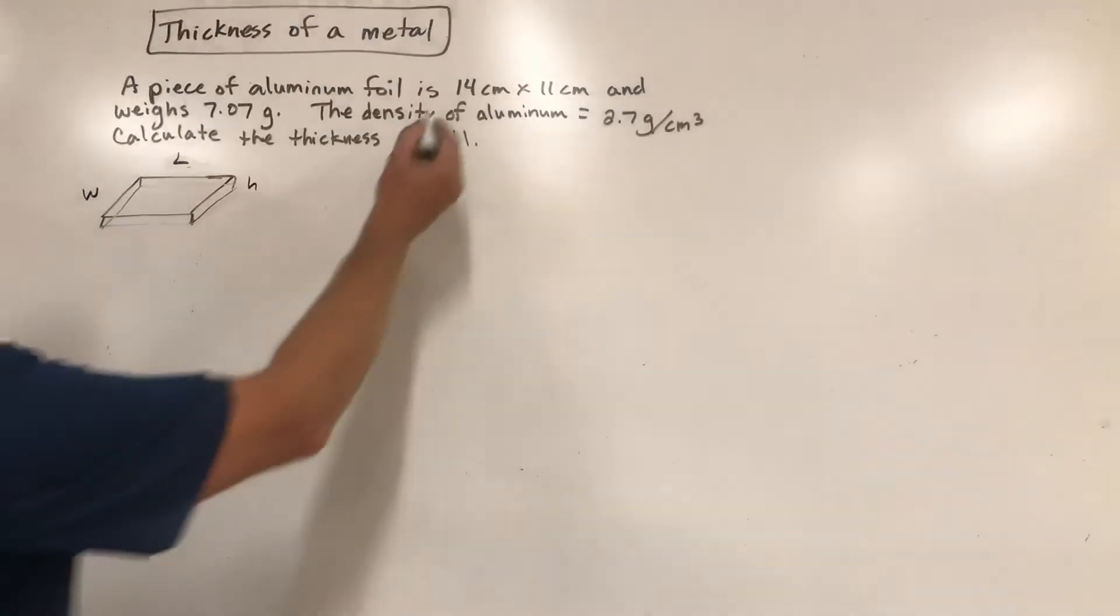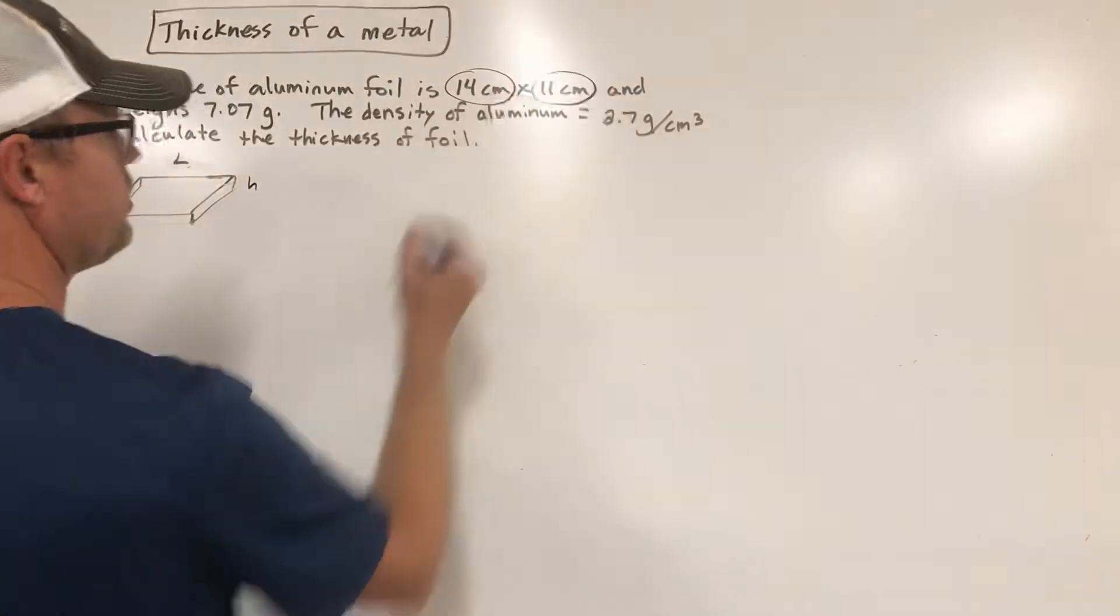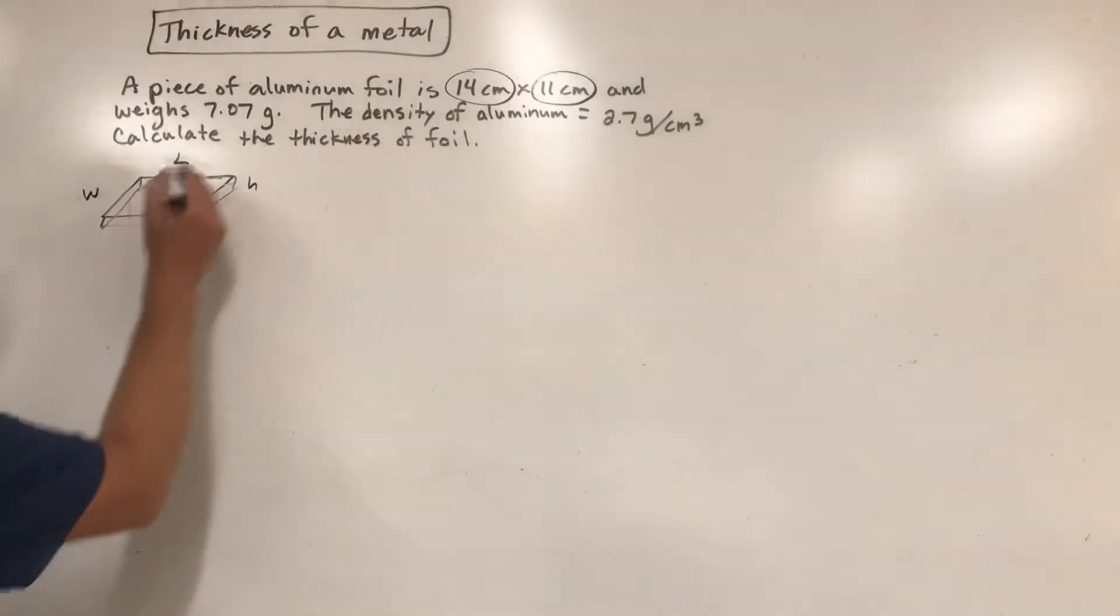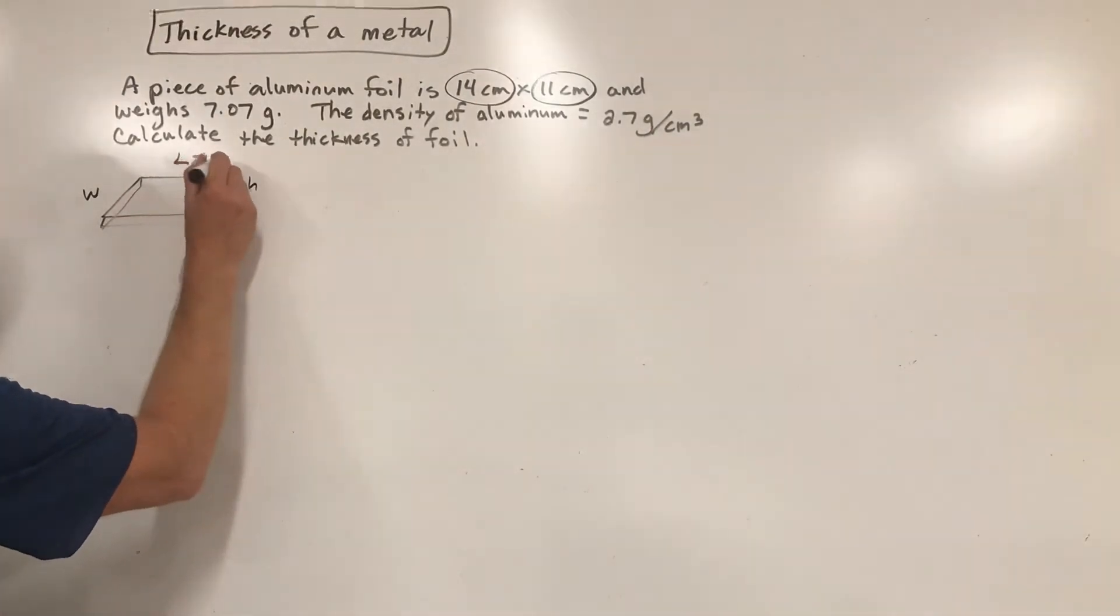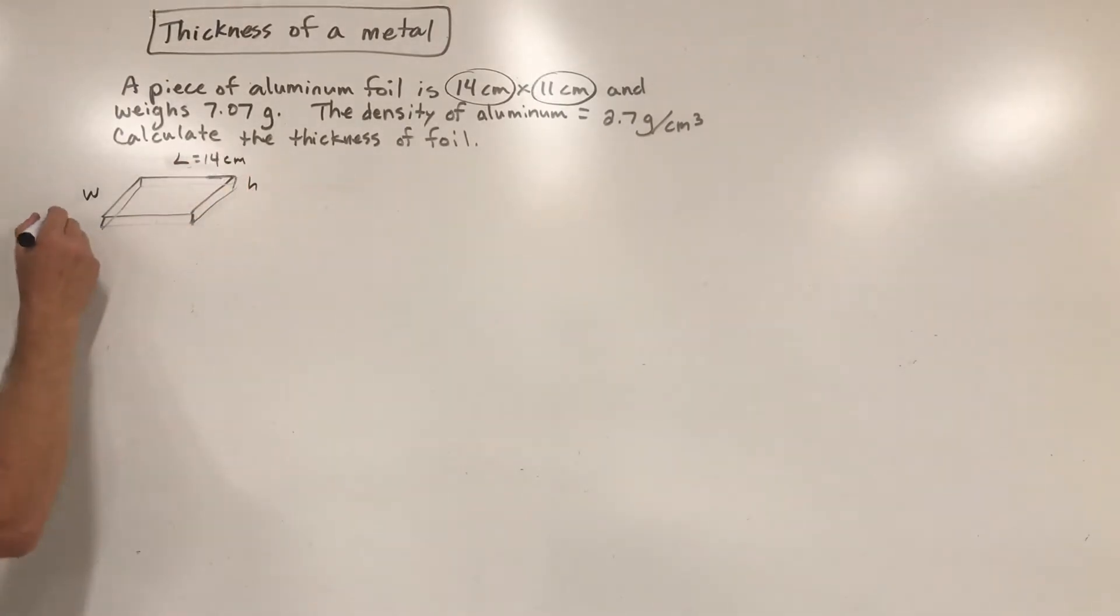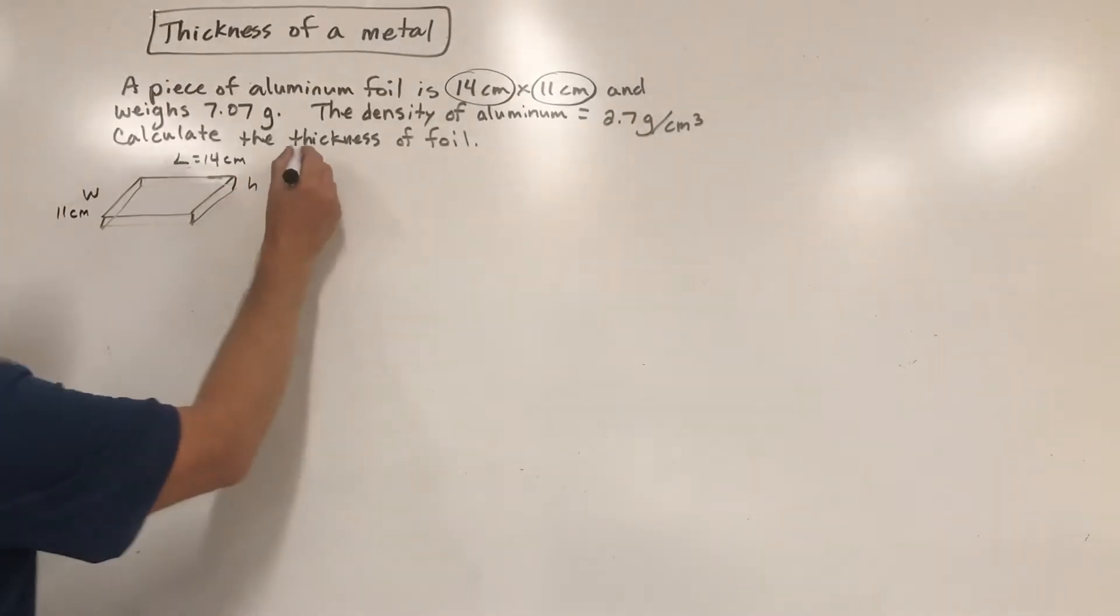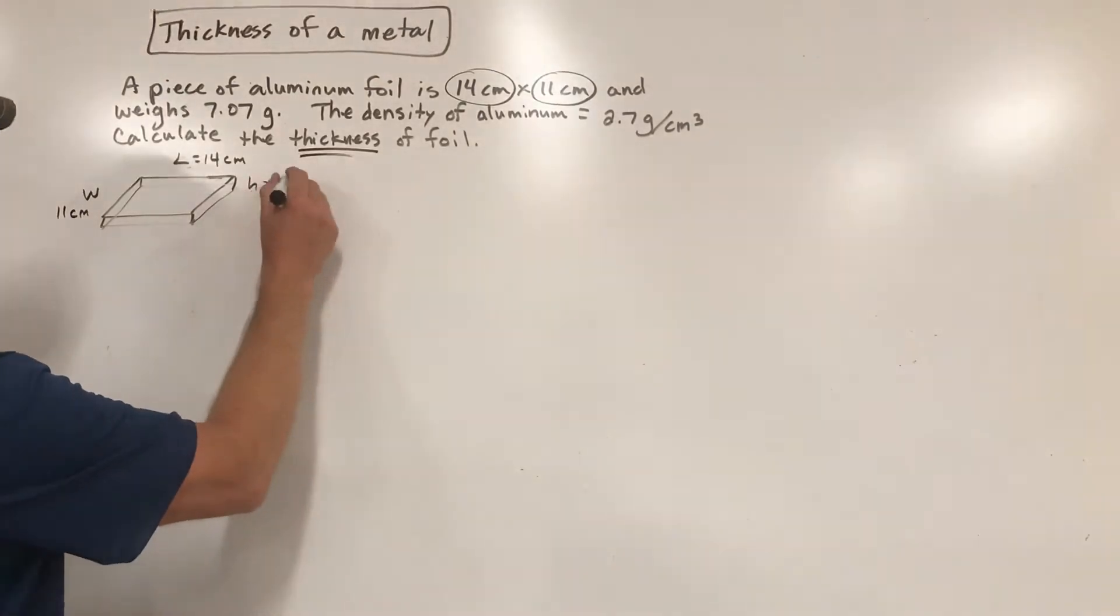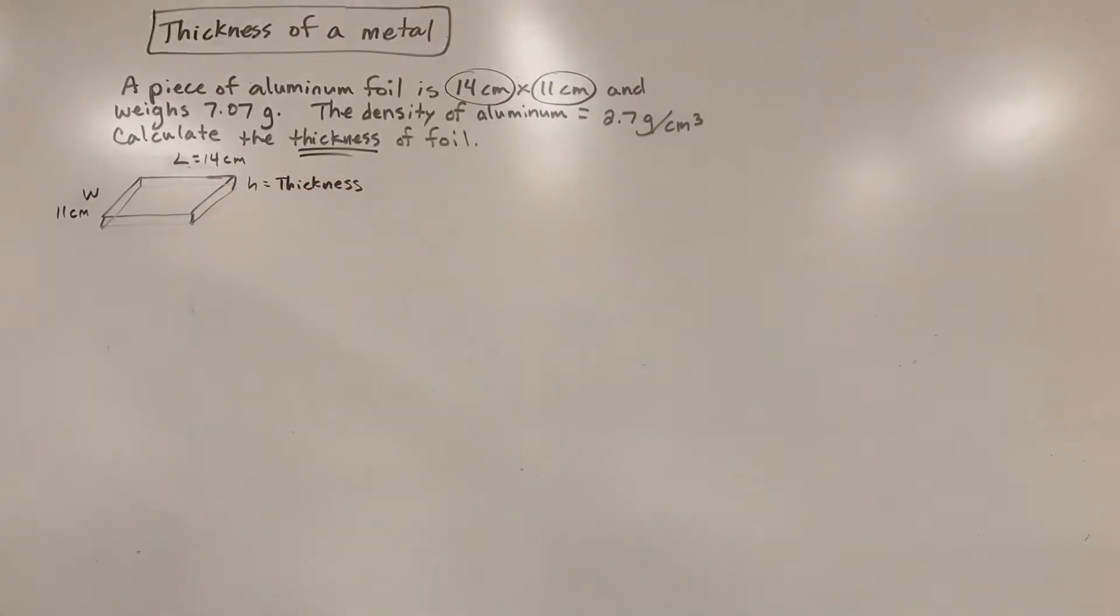We're given this, so if you get out a chunk of foil that's in a rectangular shape, we've got a 14 centimeter by 11 centimeter chunk. Let's say the length is 14 centimeters and the width is 11 centimeters. Well that leaves the height. The height is what's referred to here as the thickness. It's going to be a very, very tiny number, but still it is a height. So height, that is our thickness. When we try to calculate this, that's where it comes from.